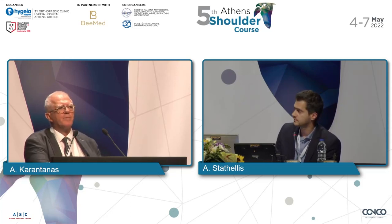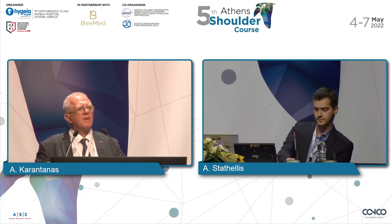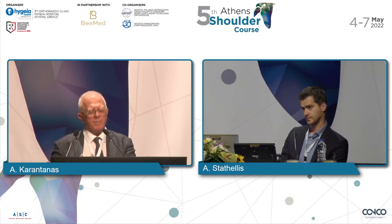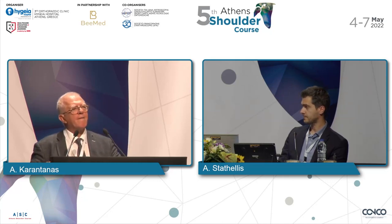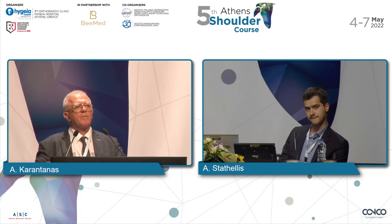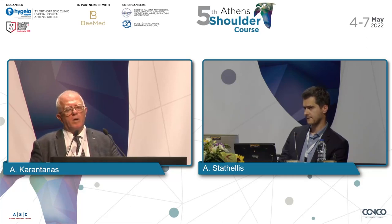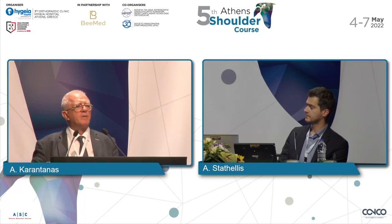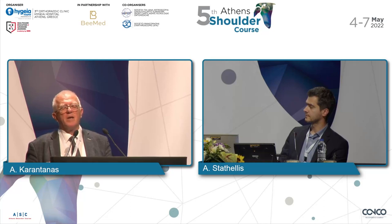Another question: the audience member is more comfortable analyzing subscapularis lesions with CT arthrography, as in France they have more experience with CT than MRI, and can place the patient in external and internal rotation. Do you have enough MRI images to analyze the subscapularis from top to bottom? The presenter prefers ultrasound because it's a superficial structure and the subscapularis examination is always dynamic — not possible with MRI. Arthrography is used mainly in athletes, and not a good idea in an 85-year-old with a suppressed immune system due to higher infection risk.